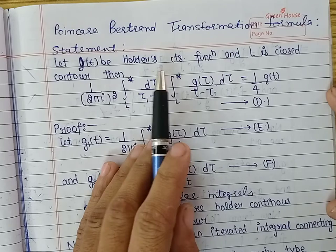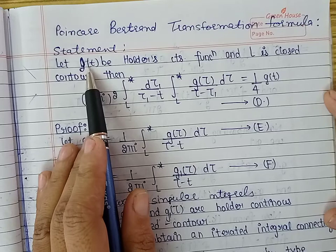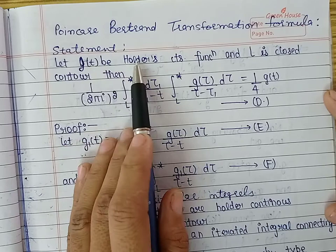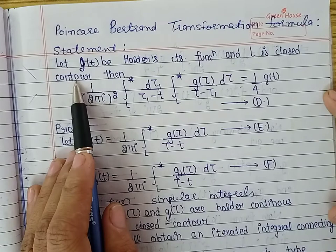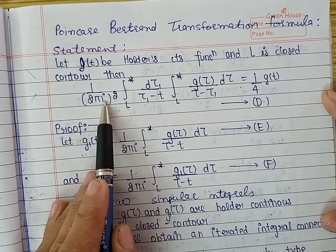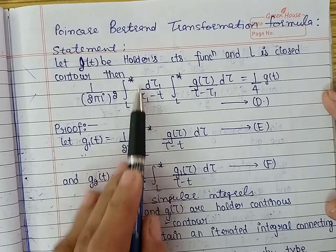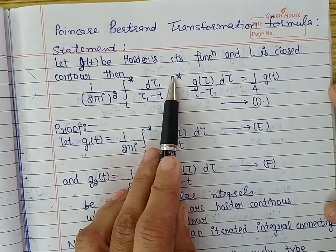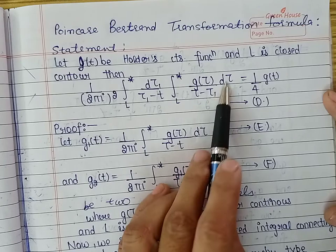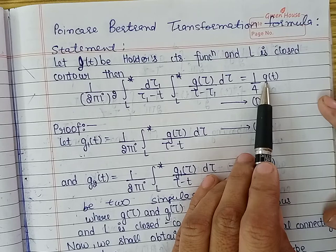This formula states that for a function g which is a function of t, where g is a Hölder continuous function and l is a closed contour, then (1 upon 2πi) squared, integral over l* of 1/(τ₁ − τ) dτ₁, times integral over l* of g(τ)/(τ − τ₁) dτ, is equal to one-fourth of g(t). This formula is called the Poincaré-Bertrand transformation formula.